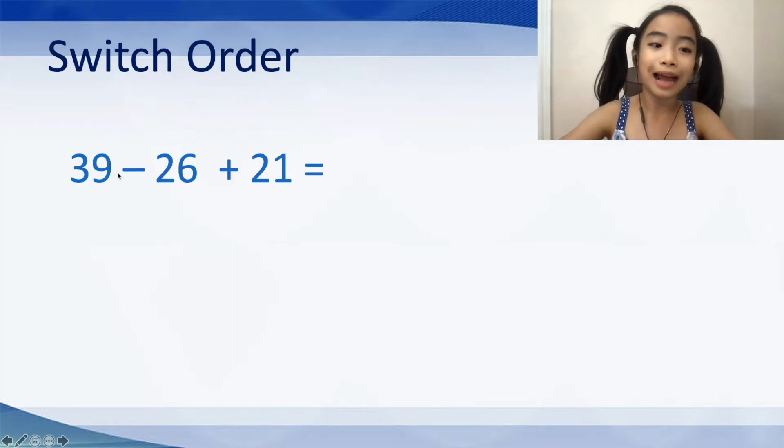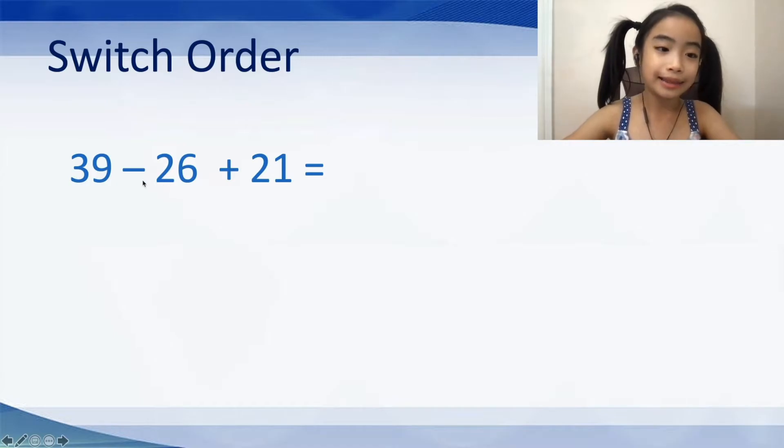This one is 39 minus 26 plus 21. Again, there are three friends. The first friend is 39, and then we have minus 26, and lastly, we have plus 21.